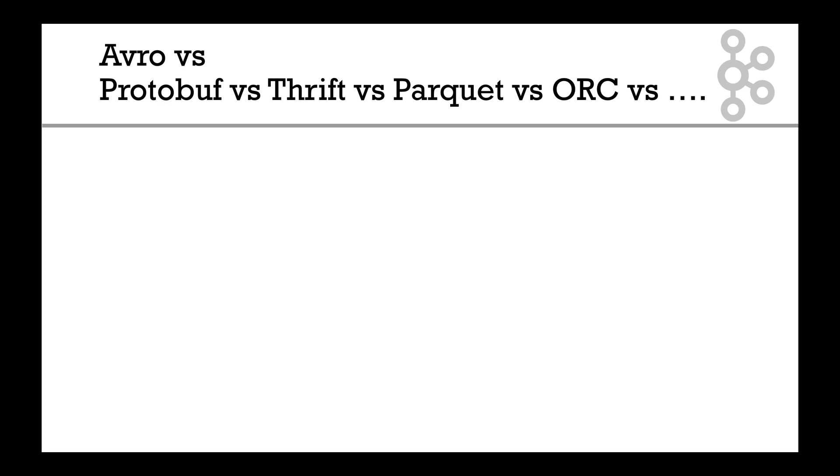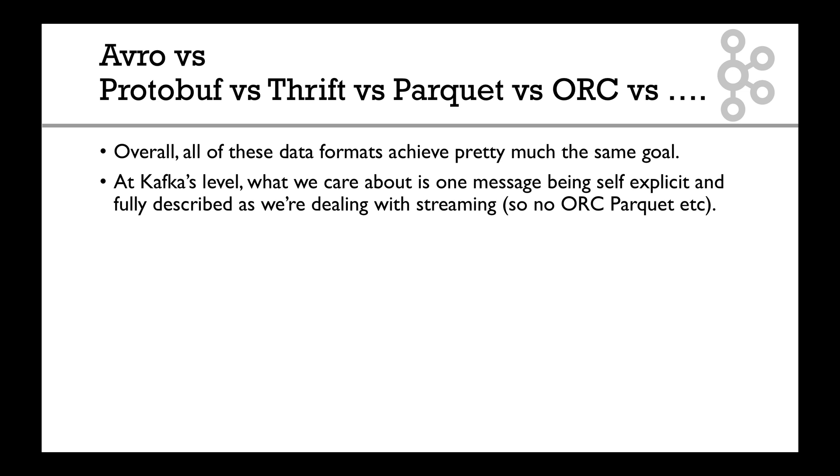Before I dive into the course and you're like, 'but what about protobuf or thrift or parquet or ORC or my data format that I really like?' Overall, they're all pretty much doing the same thing, which is to compress data and put it in some way. I won't get into debates, but at the Kafka level, what we care about is one message being self-explicit and fully describable. And because we're dealing with streaming, there's no ORC, no parquet, and no columnar-based format.